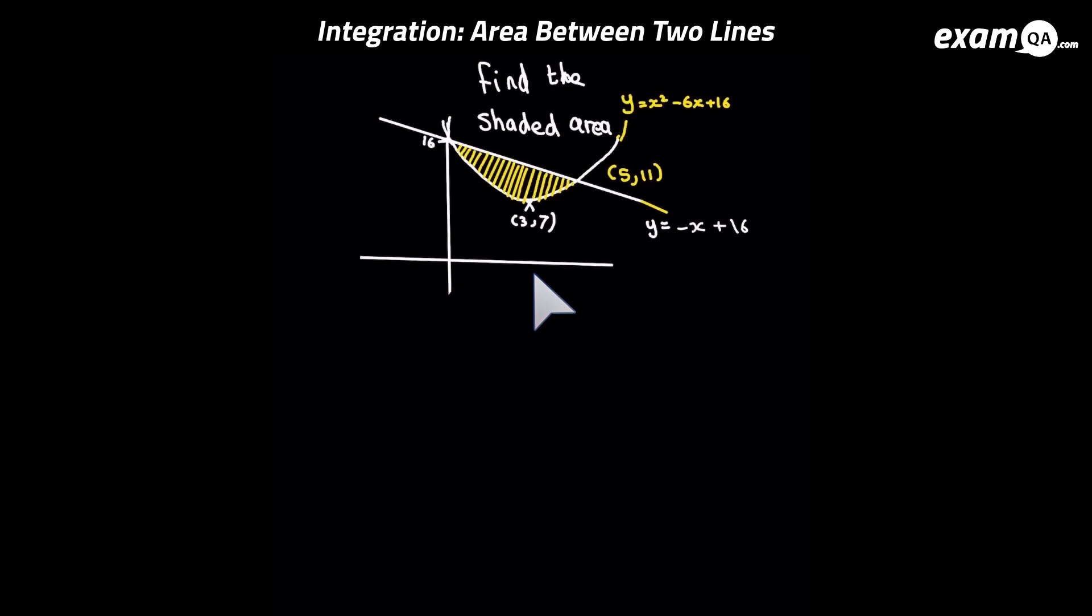So here we've got a question and we need to work out this shaded area. Now there's two methods to do it. There's one I call the shapes method and there's the really simple one where it gives you the area between the curve straight away.